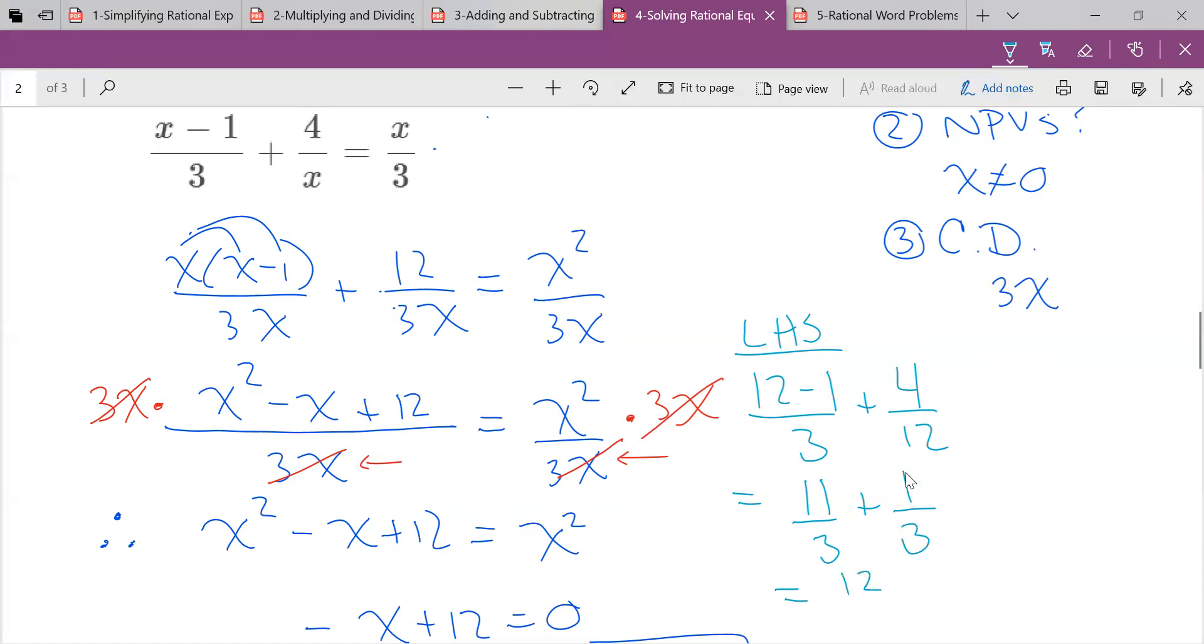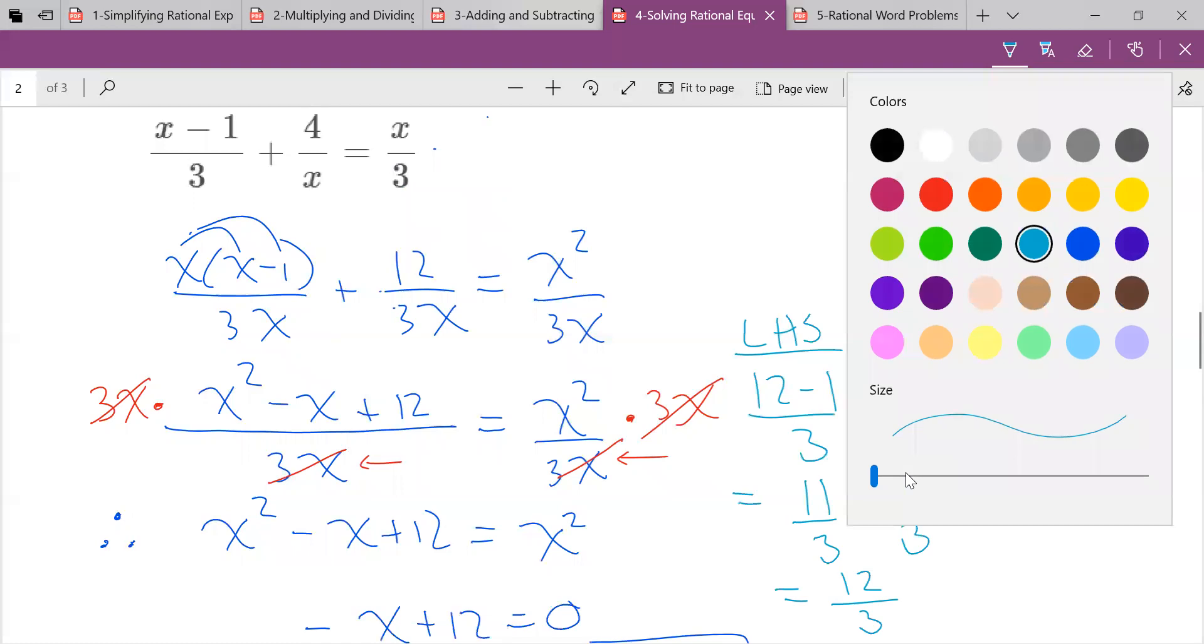I'm sure a couple of you were like, hey, stop it. What are you doing? Okay. That's 12 over 3. I check the right-hand side.